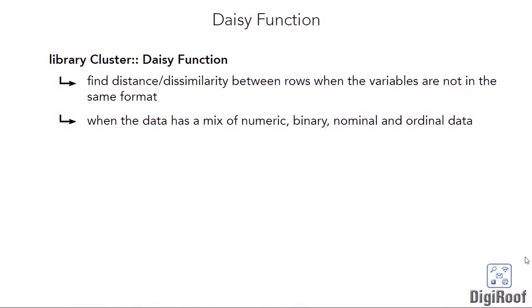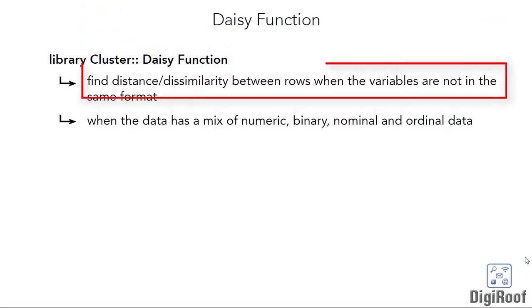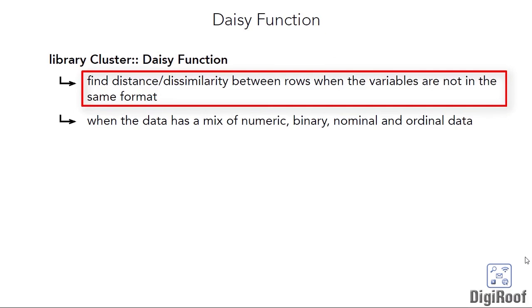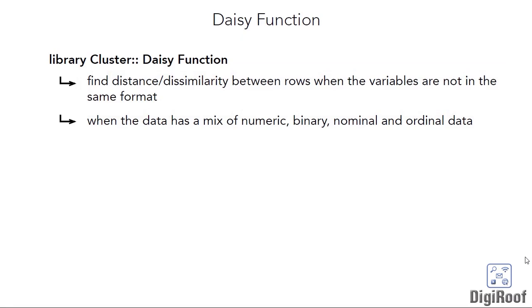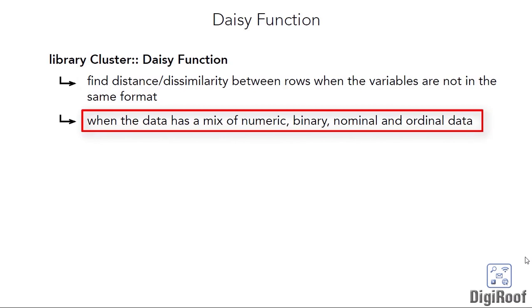In this video, we are going to talk about the daisy function in R, which is a part of the cluster package. This function allows us to find the distance between rows when the variables in the data are not in the same format. Till now in this course, I have told you the clustering techniques that can be followed for different kinds of data. But we are yet to take into consideration data that have a mix of variables including numeric, binary, and nominal variables.